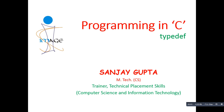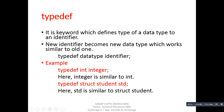Hello friends, I am Sanjay Gupta. In this tutorial I am going to discuss about the keyword typedef. It is a keyword which defines the type of a data type to an identifier. A new identifier becomes a new data type which works similar to the old one. In the typedef syntax, we have the typedef keyword, then a particular data type, and then an identifier. typedef means type definition — it defines the properties of this data type to an identifier.